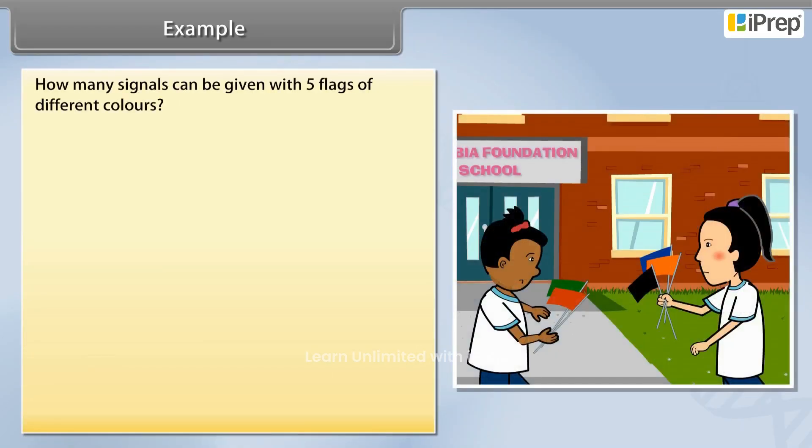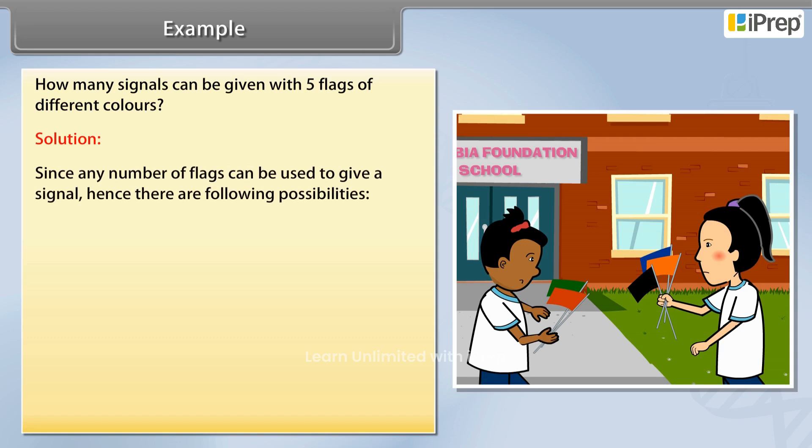How many signals can be given with five flags of different colors? Solution: Since any number of flags can be used to give a signal, there are the following possibilities: 1) Number of ways when only one flag is used